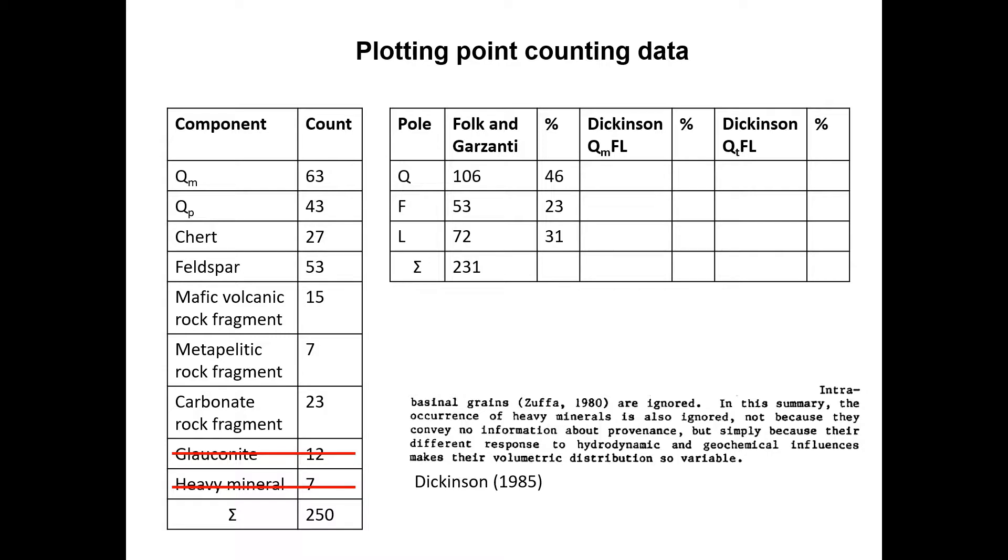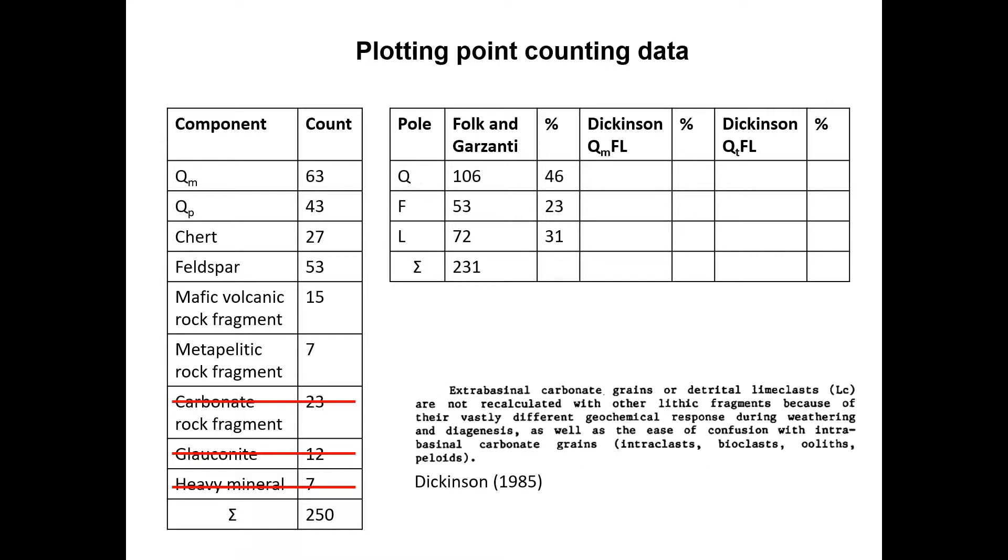For both plots, Dickinson suggests to ignore intrabasinal grains, heavy minerals, and phyllosilicates, so similar to the Folk and the Garzanti approach. However, Dickinson also suggests to ignore carbonate rock fragments.